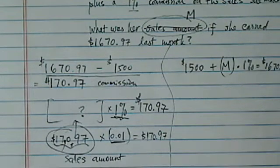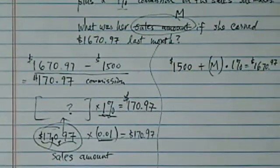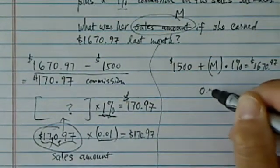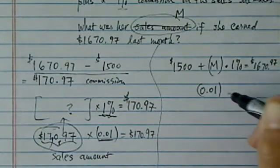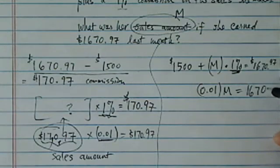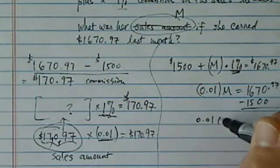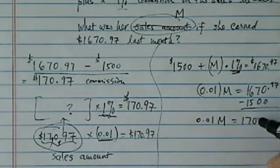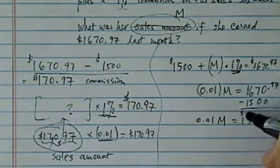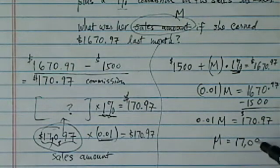Now all we have to do is really just solve for M. So 0.01, which is the 1%, times M is equal to $1,670.97 minus $1,500. So 0.01M is equal to $170.97, and then M is equal to $17,097.